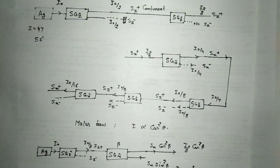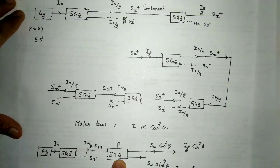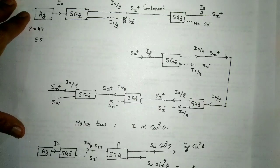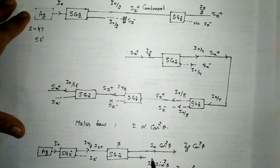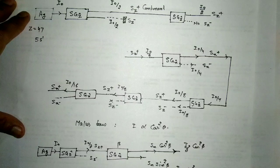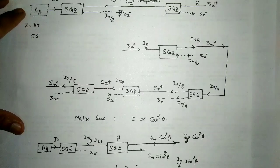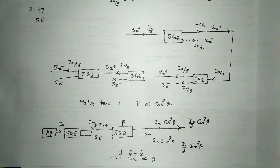If N-cap is along the Z-axis, then β = 0, meaning the sin²β component vanishes and we get only the Sz+ component. This result is consistent with all the arrangements discussed above. This is an important concept for the CSIR-NET/JRF exam.